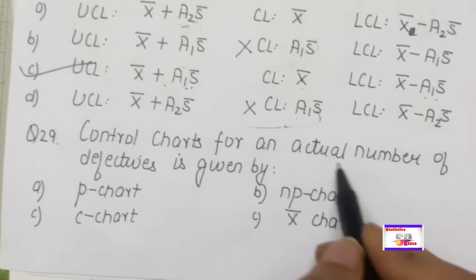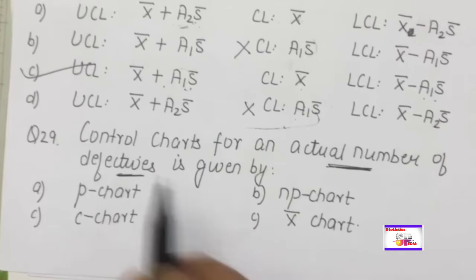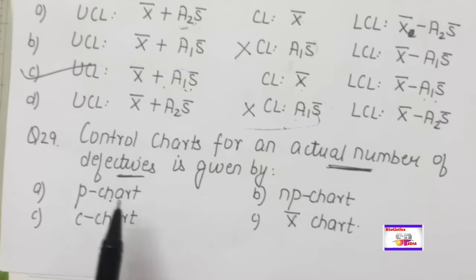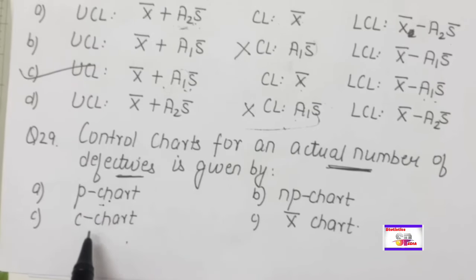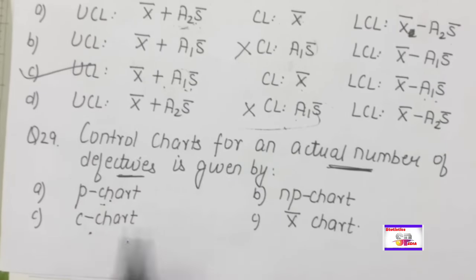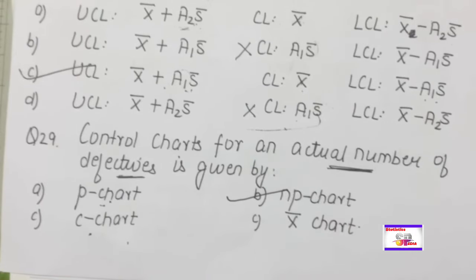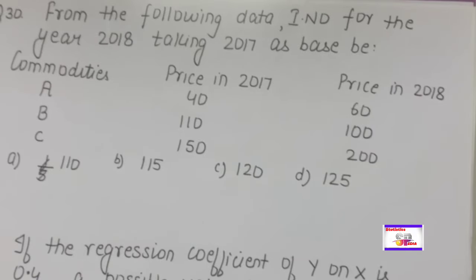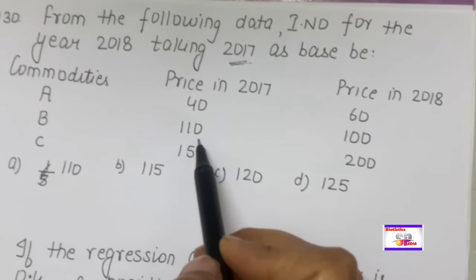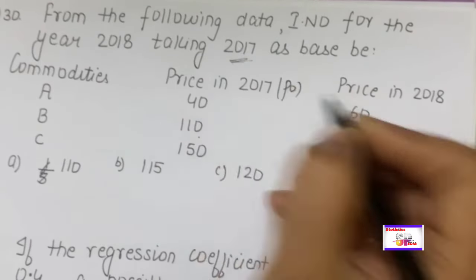Control charts for attributes: p chart is for fraction defectives; c chart is for the number of defects per unit; np chart is for the actual number of defectives. So the control chart for actual number of defectives is the np chart.